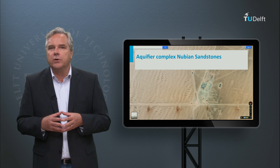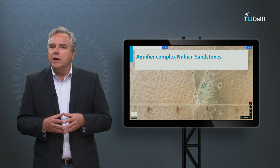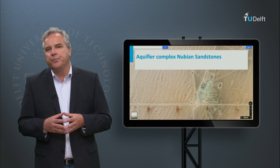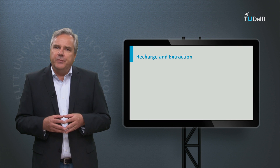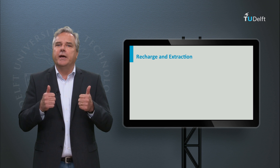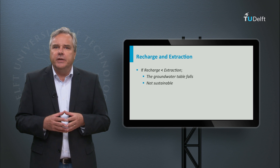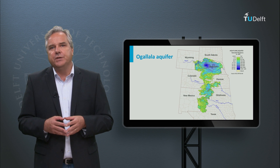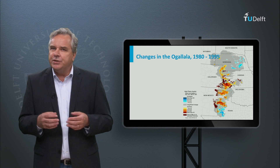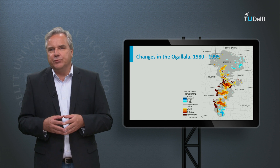A famous example is the aquifer complex of the Nubian sandstones under the eastern part of the Sahara, where water is pumped up that infiltrated 100,000 to 1 million years ago. Clearly, if the recharge into an aquifer is less than the water pumped from an aquifer, the groundwater table will fall. At some point it will then become economically unfeasible to pump more water up because the pumping costs become too high. Exploitation of an aquifer is never sustainable when extraction exceeds recharge.